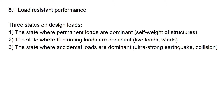Section 5.1: Load-Resistant Performance. We classify design loads into three stages to verify the load-resistant performance of steel members. First, the state where permanent loads are dominant, such as self-weight of structures. Second, the state where fluctuating loads are dominant, such as live loads and winds. Third, the state where accidental loads are dominant, such as ultra-strong earthquakes or collision.